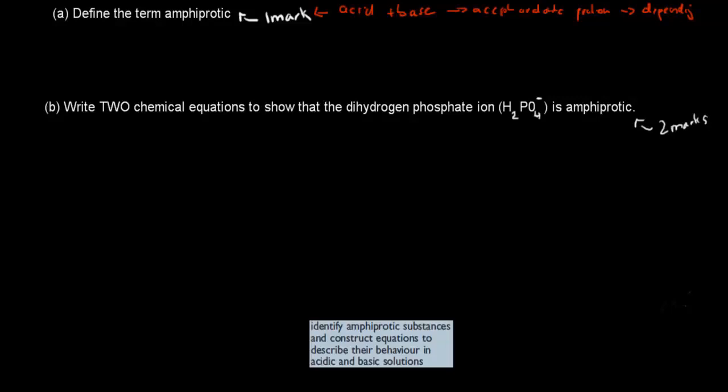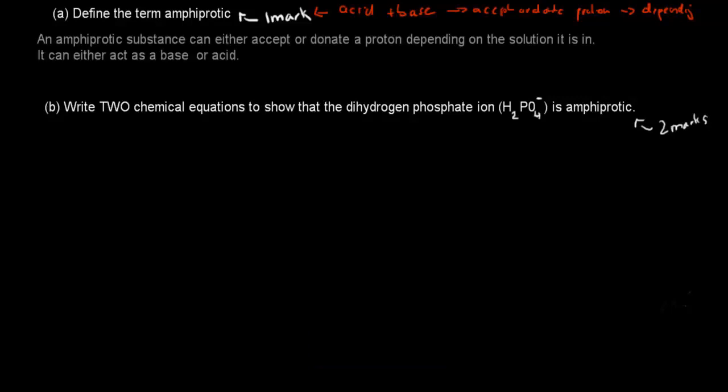So what I wrote is an amphiprotic substance can either accept or donate a proton, depending on the solution it is in. It can either act as a base or an acid. And that's a quick definition. And because it's only worth one mark, that's all you have to do, a quick definition.